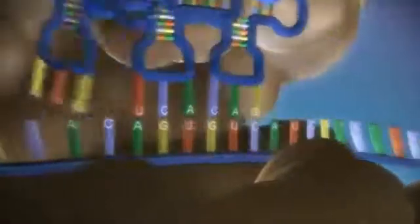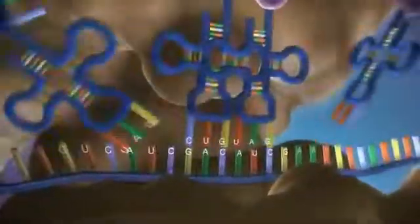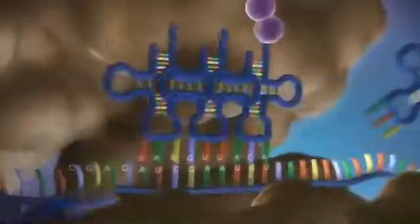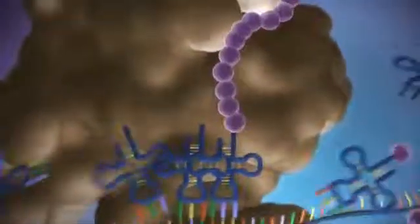The messenger RNA is read three bases at a time. As each triplet is read, a transfer RNA delivers the corresponding amino acid. This is added to a growing chain of amino acids.